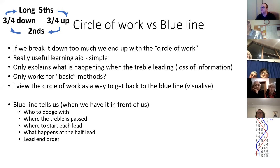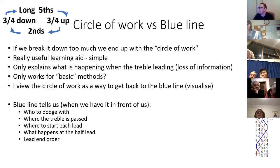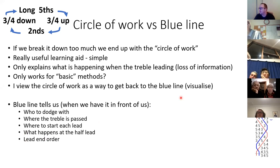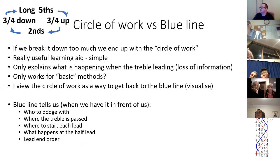The blue line has all the information. It tells us who we're dodging with — so the two's dodging with the five here. It tells us where we pass the treble, which can be really useful when trying to learn methods. It tells you where we make places. And it tells you what happens at the half lead — in this case you're just plain hunting. It also tells you the lead-end order — in this case two, four, five.